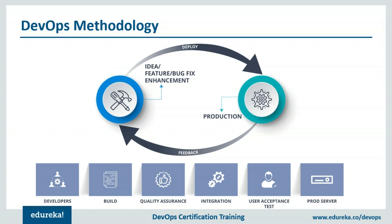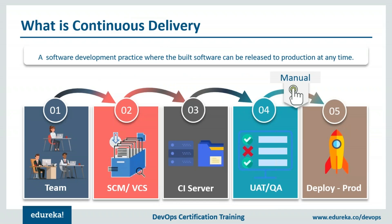In continuous deployment, any small change a developer makes is directly deployed onto the production servers, which is how large companies report 50 to 60 deployments per week. Continuous delivery is a software development discipline where you build software so it can be released to production at any given time. You achieve this by continuously integrating software, building executables, and running automated tests on those executable files. You then push them into increasingly production-like environments to ensure the software will work in production. This is where continuous delivery stops — the process halts until the business requests the change.